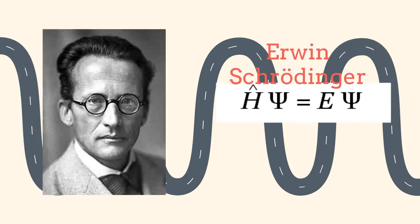After the appearance of the de Broglie wavelength, it was understood that a wave equation was necessary for describing the dynamics of particles. This is the famous Schrödinger equation.